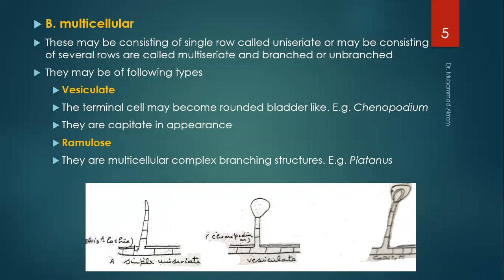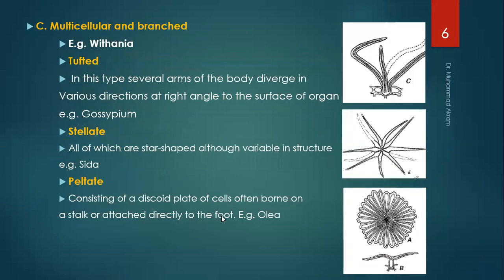These structures represent the multicellular types of trichomes: a simple uniseriate, a vesiculate, and a multicellular branched type — for example, in Withania somnifera. The tufted type of trichomes: in this type, several arms of the body diverge in various directions at right angles to the surface. For example, in Gossypium. This is the tufted stellate type, all of which are star-shaped although variable in structure — for example, in Sida cordifolia.